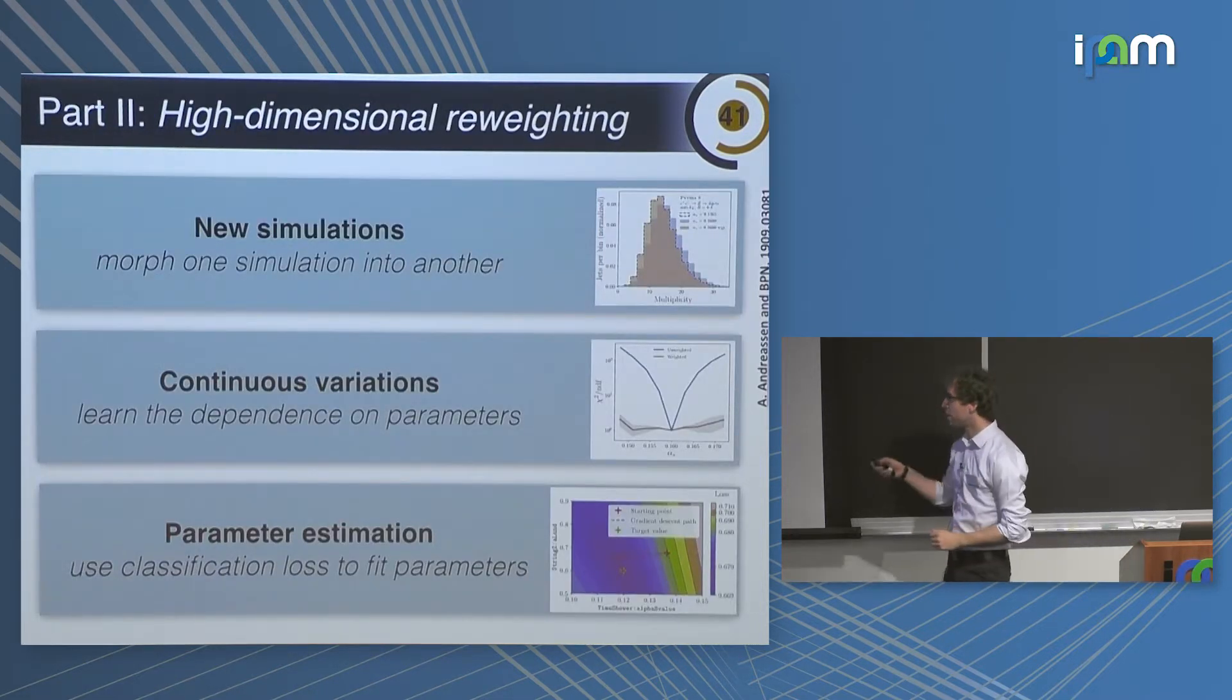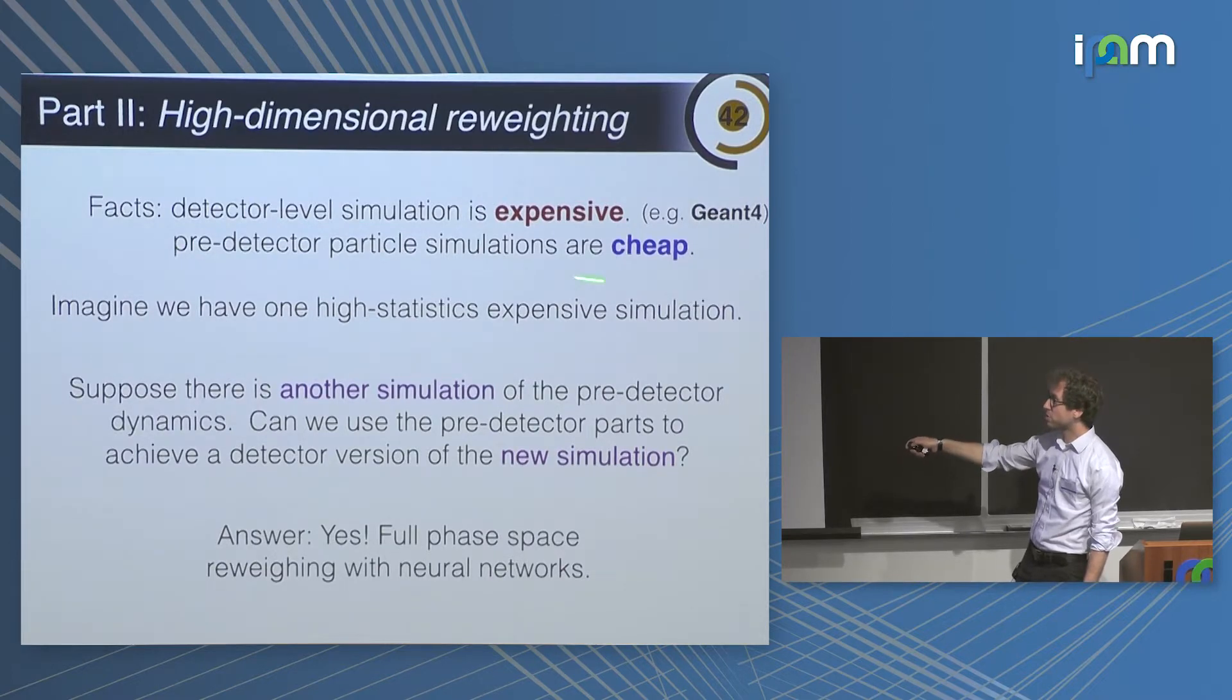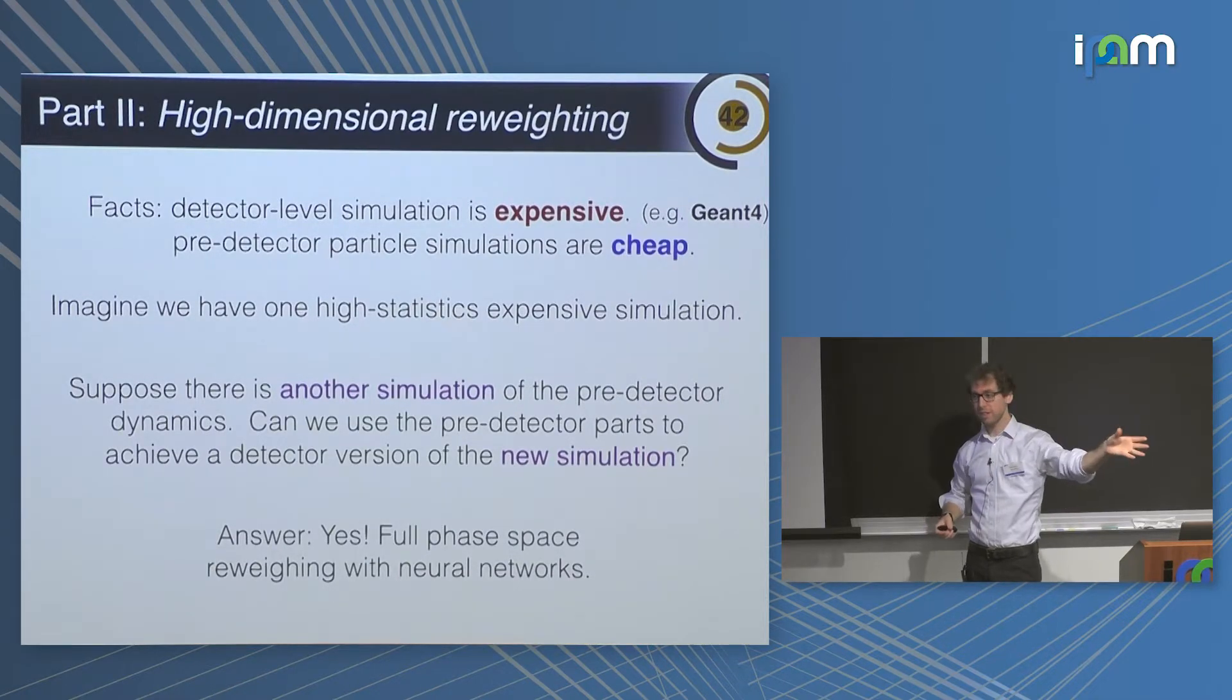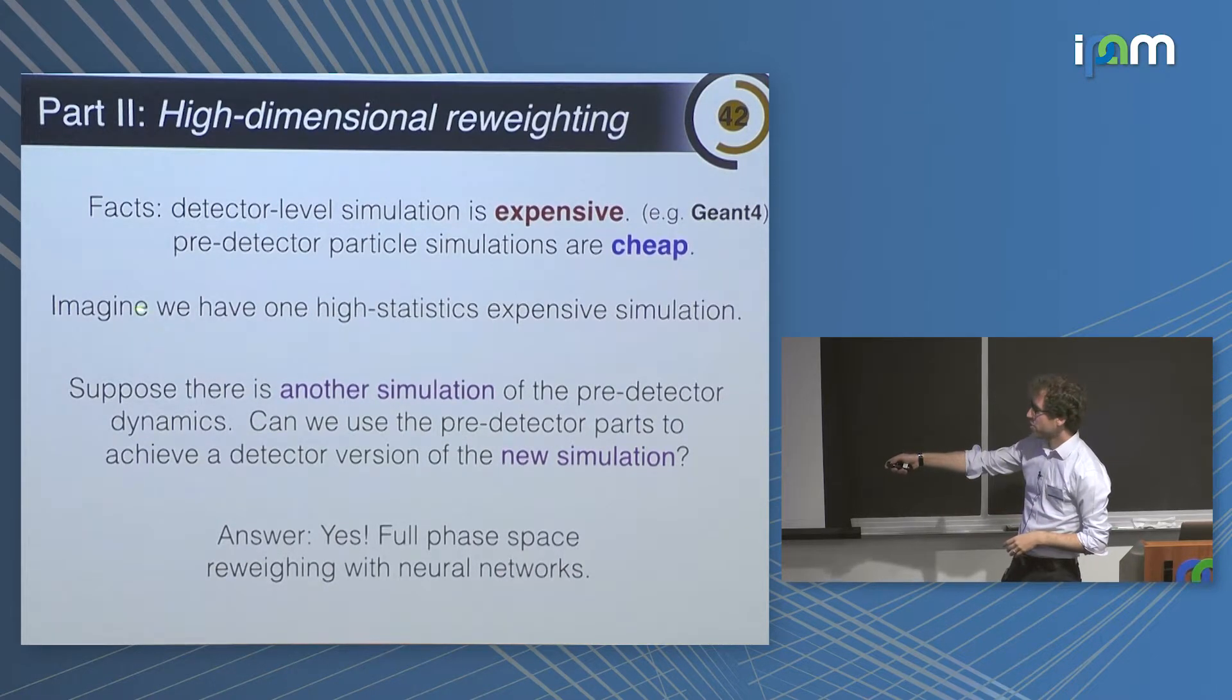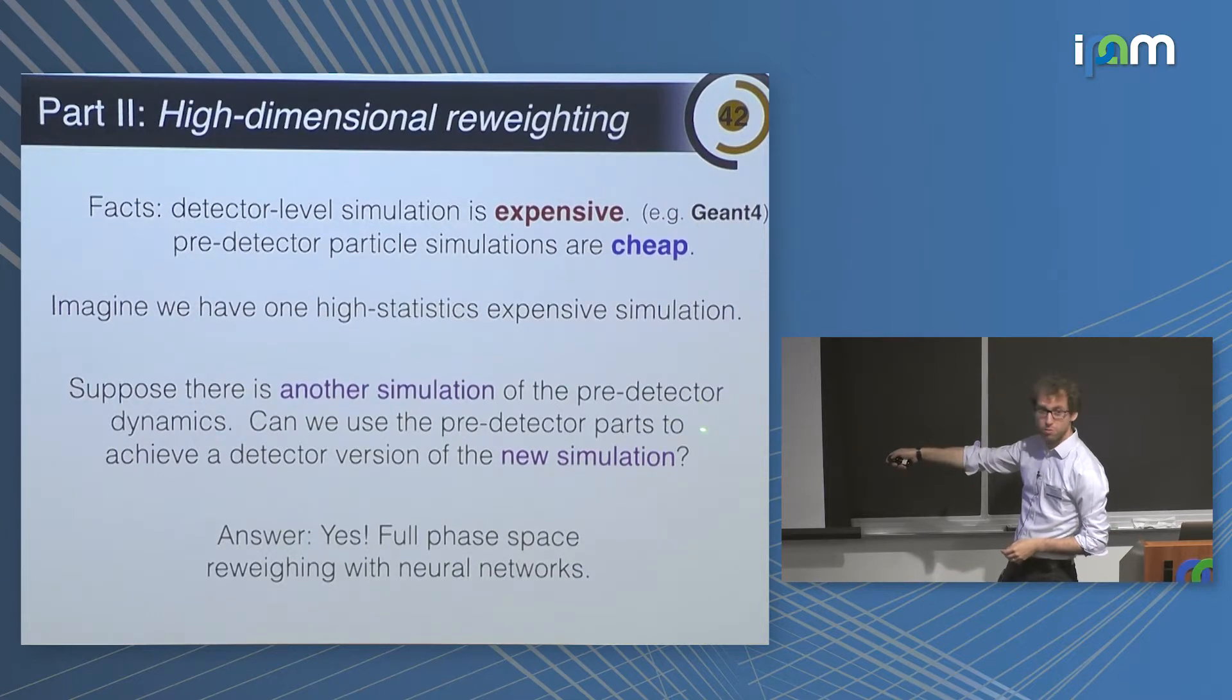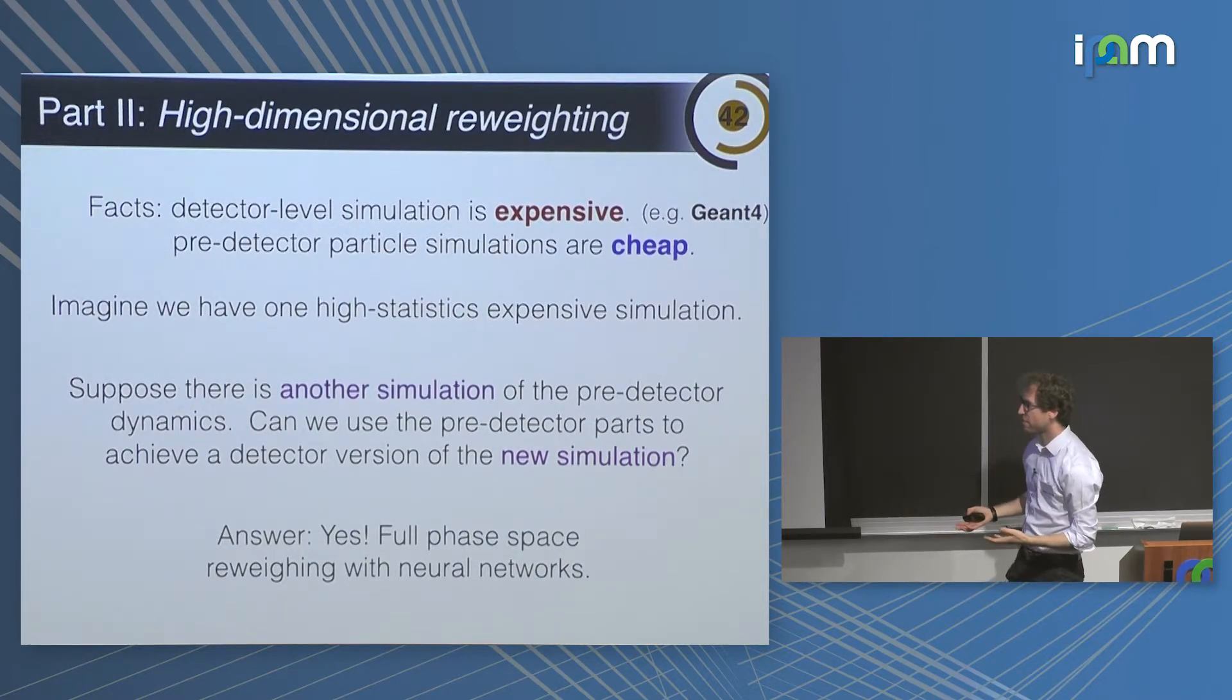So reweighting. The idea is, as I've already tried to motivate multiple times, detector simulation is very expensive. But pre-detector particle simulations are cheap. I factorized the simulation into multiple parts. There's the hard scatter part where you have the outgoing particles, and then the interaction of the particles with the detector. I'm just going to call those pre-detector and detector simulations. Imagine we have one high statistics expensive simulation that includes the detector simulation. And now imagine I have another simulation of just the pre-detector part. The idea is, can I take the expensive one and this cheap one and reweight the expensive one using just the pre-detector part?